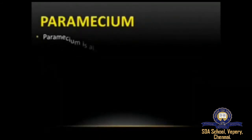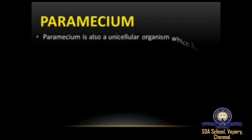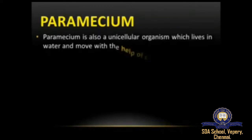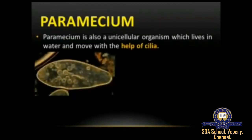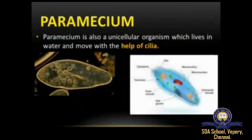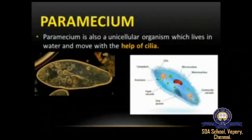Next we'll move on to paramecium. Paramecium is also a unicellular organism — it contains only a single type of cell, lives in water, and moves with the help of cilia. From the picture you can see that paramecium also contains a contractile vacuole and a food vacuole. The food vacuole collects food from the water and helps in digestion, while the contractile vacuole handles excretion — eliminating waste.